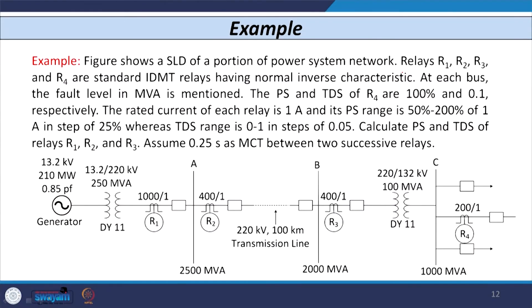In this example, the single line diagram of the network is given. There are 4 relays: R1, R2, R3, R4, and all are IDMT overcurrent relays having normal inverse characteristic. At each bus — bus A, bus B, and bus C — the fault level in MVA is mentioned, so you can calculate the magnitude of fault current using the given voltage level. The rated current of all relays is 1 ampere. The plug setting range is from 50 to 200 percent of rated current in steps of 25 percent, and the time dial setting range is 0 to 1 second in steps of 0.05 second.